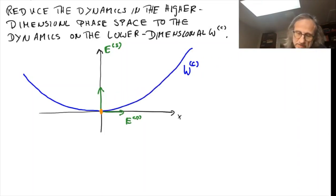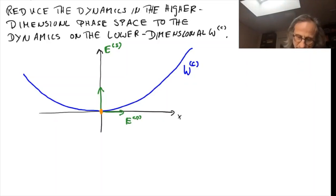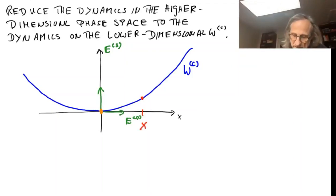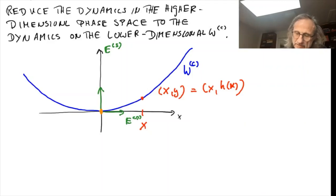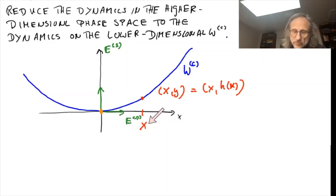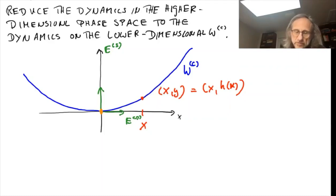Because the center manifold is tangential to the center eigenspace, we can parametrize points on the center manifold simply by a coordinate on the center eigenspace. A point on the center manifold can be written as (x, y) where the y-coordinate is given by some function h of x. As this point evolves, it can be parametrized by the position of x, and we'll get the evolution on the center manifold by having an evolution for x. That also gives us an equation for h(x), which gives us the center manifold itself.